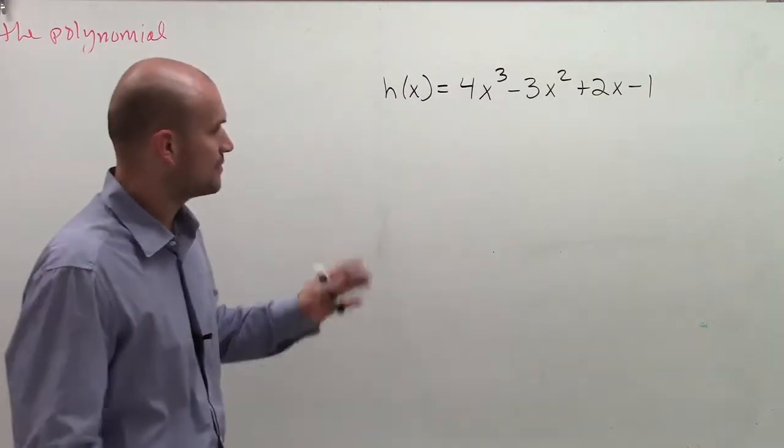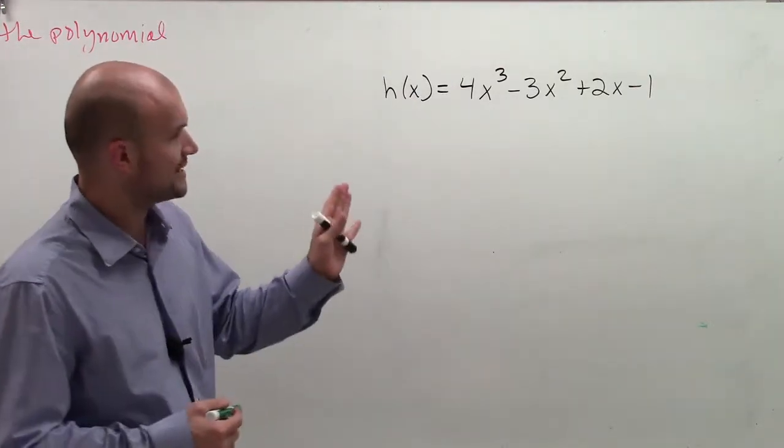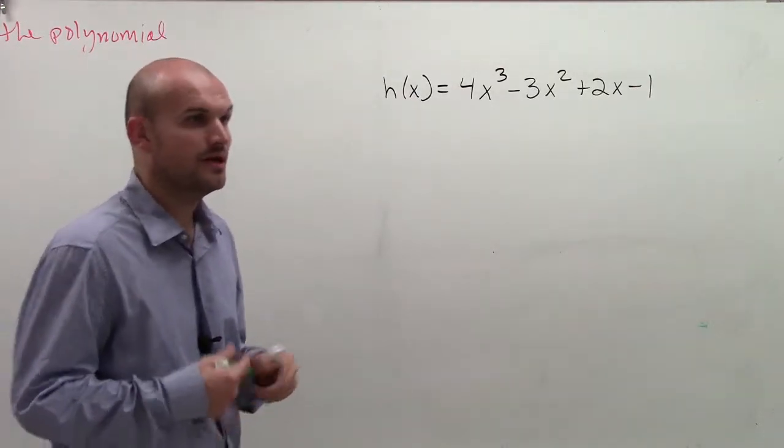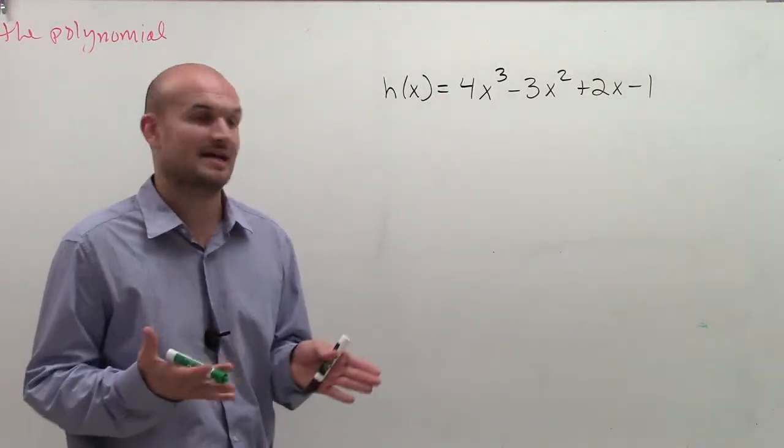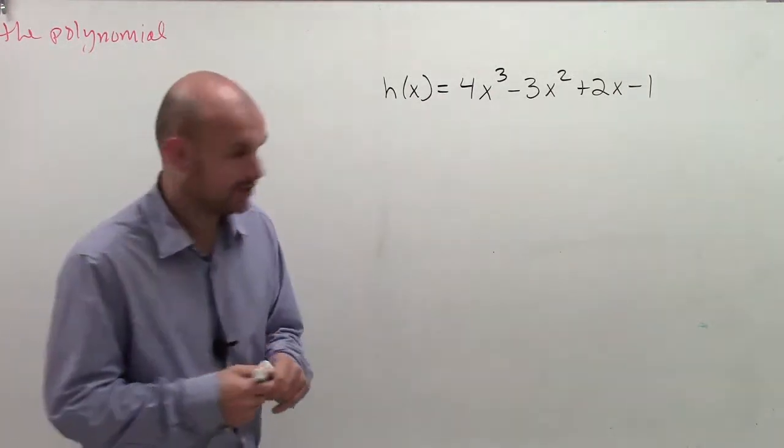So if I have h(x) = 4x³ - 3x² + 2x - 1, what I'm going to do right now is look at the variations of the sign of this polynomial.